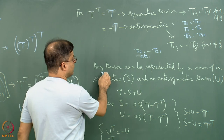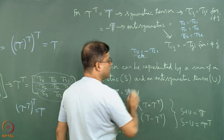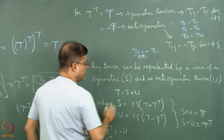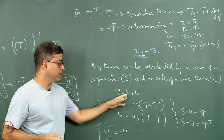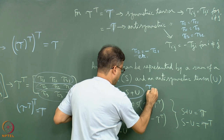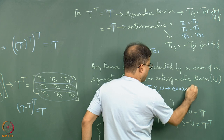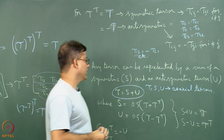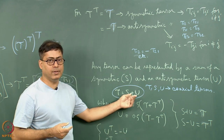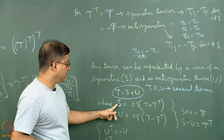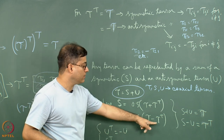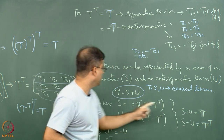Any tensor can be represented as the sum of a symmetric tensor S and an anti-symmetric tensor U, so tau equals S plus U. Since tau is resolved this way, all three — tau, S, and U — are coaxial tensors, because the same axes that define tau_ij also work for S and U; we are simply splitting the matrix into two parts. Here S equals 0.5 times (tau plus tau^T) and U equals 0.5 times (tau minus tau^T), and from these, S plus U equals tau.